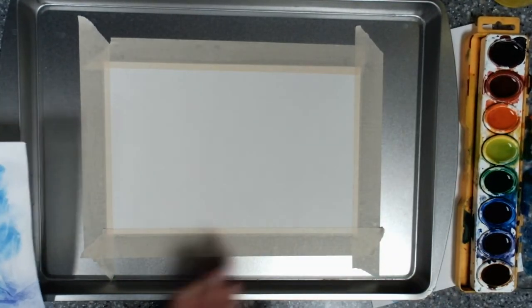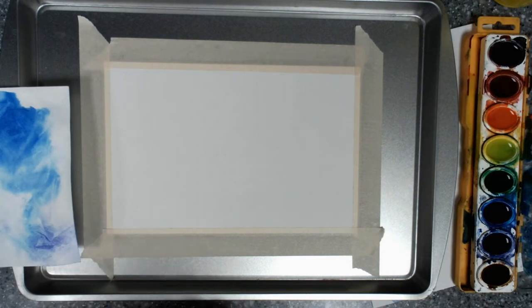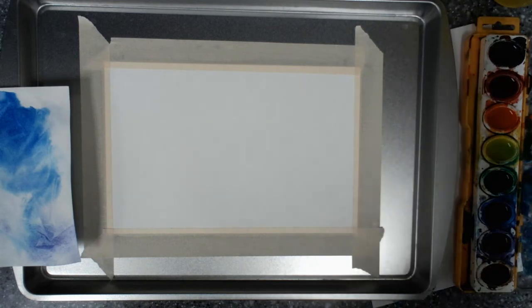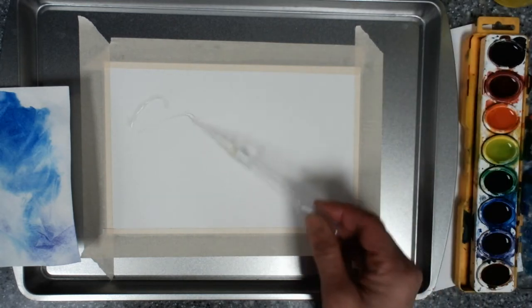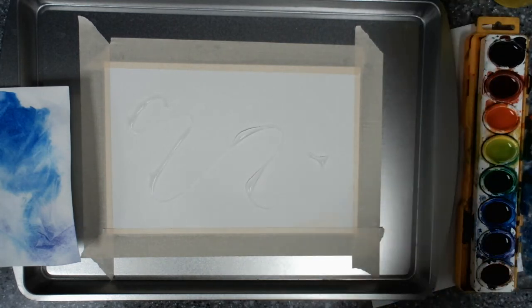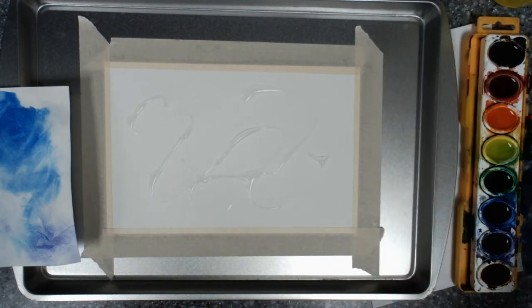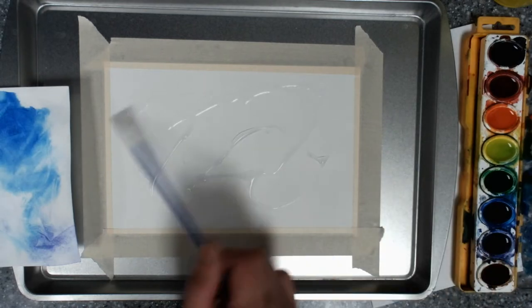So once again we have tape around the card stock on a craft tray. You can take the pipette, fill it up with water and just drizzle water around on the paper. You want this one to be very wet, to have a lot of water on it.